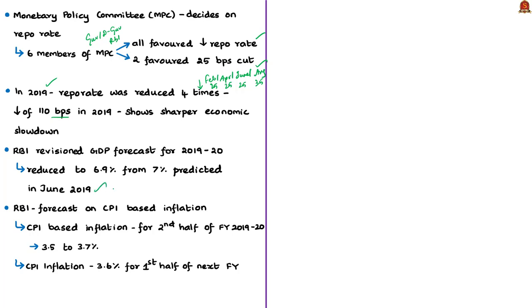Considering this economic slowdown, the RBI has reduced its forecasted GDP growth for the current fiscal year (April 2019 to March 2020, also referred to as Fiscal 2020) from 7% to 6.9% — the 7% had been predicted during the June monetary policy review. The RBI uses the Consumer Price Index to forecast inflation. CPI-based inflation for the second half of the financial year (October 2019 to March 2020) is forecast at 3.5–3.7%, and for the first quarter of the next financial year (April to June 2020) it is forecasted at 3.6%.